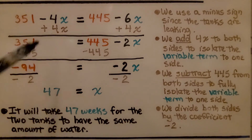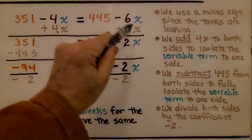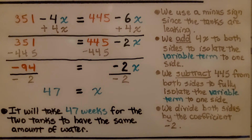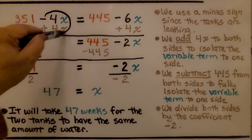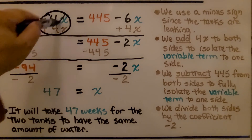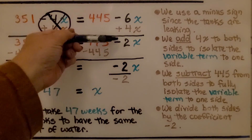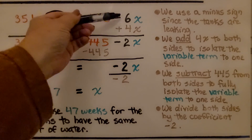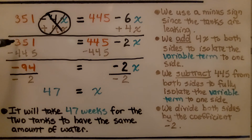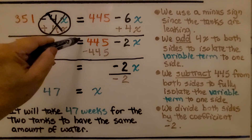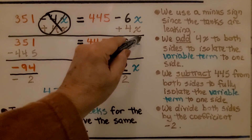We add 4x to both sides to isolate the variable term to one side — that's our goal. We have a minus 4x and a plus 4x that makes a zero pair and eliminates this. When we add 4x to the other side, we go from negative 6 to a negative 2 — negative 6 plus 4 is negative 2. Now on this side we have 351, and it's equal to 445 minus 2x.